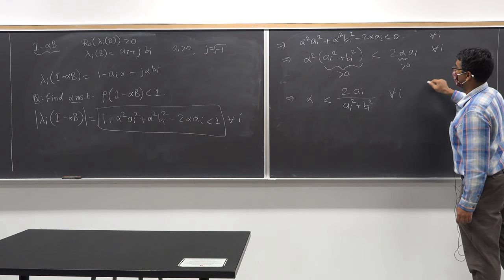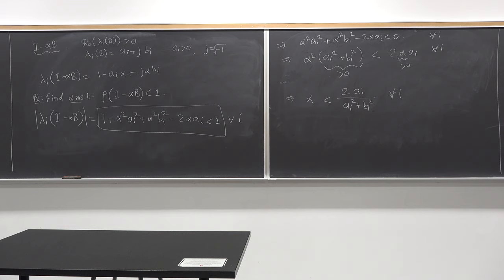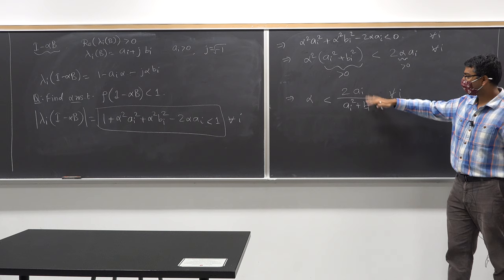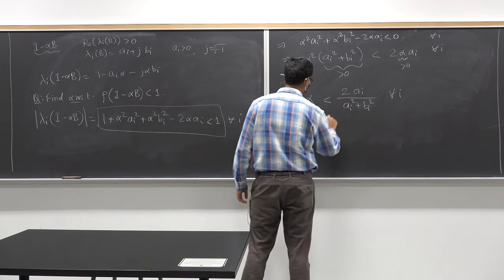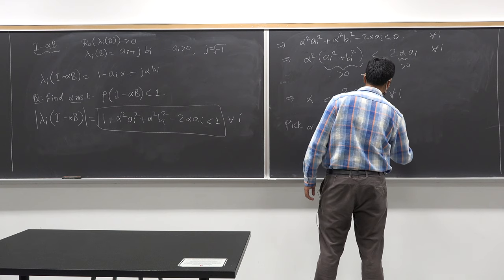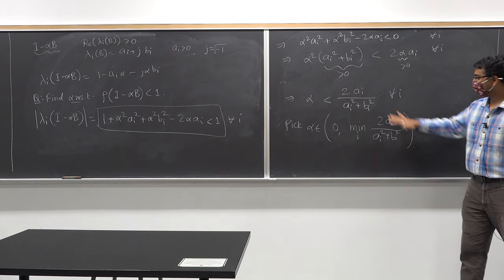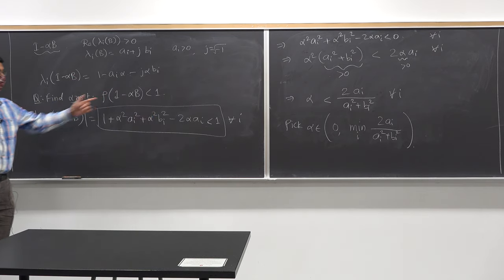This term is positive, so alpha is less than some constant for all i. If I pick alpha in the open interval (0, min over all i of 2*A_i / (A_i squared + B_i squared)), then the spectral radius rho of I minus alpha B will be strictly less than one.